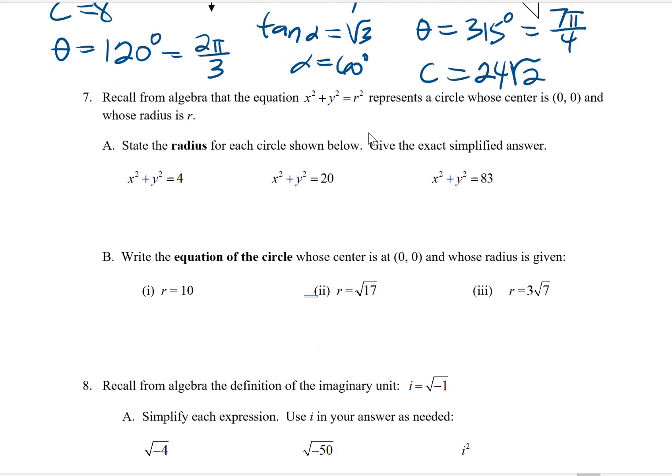Problem number 7. So the equation x² + y² = r² represents a circle in the xy plane with a center of (0, 0), and a radius of r. So take a look at all these circles. We just want to say what the radius is. Remember, the number over here is not the radius. It's the radius squared.